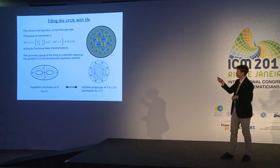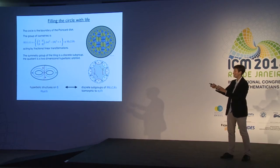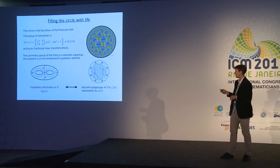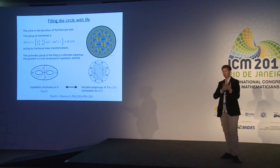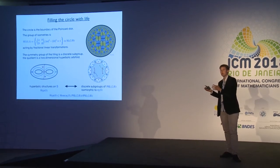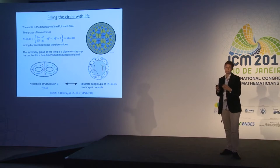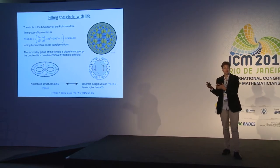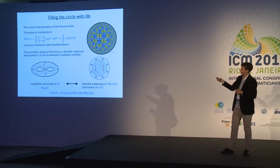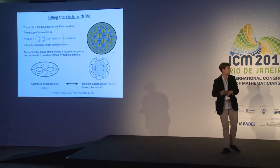More generally, a closed orientable surface of genus g ≥ 2 carries a hyperbolic structure, and there is a one-to-one correspondence between putting a hyperbolic structure on the surface and realizing the fundamental group of the surface as a discrete subgroup of the orientation-preserving isometries of the Poincaré disk. This gives an embedding of the space of all hyperbolic structures on the surface into the variety of homomorphisms of π₁ into PSL(2,ℝ), well defined up to conjugation by PSL(2,ℝ).